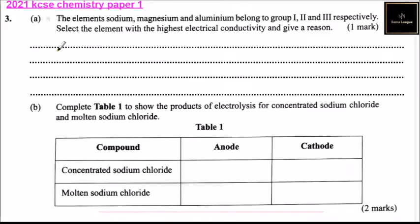Question number 3. We are told the elements sodium, magnesium, and aluminum belong to group 1, 2, and 3 respectively. Select the element with the highest electrical conductivity and give a reason.